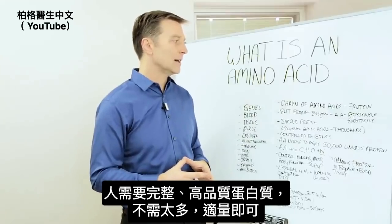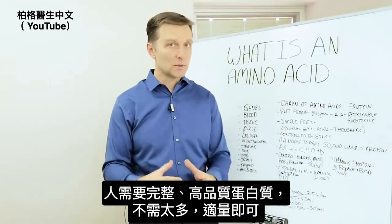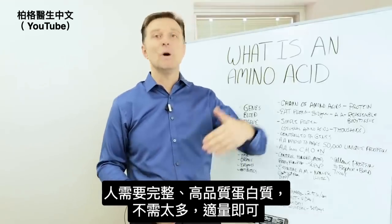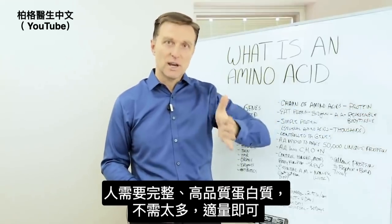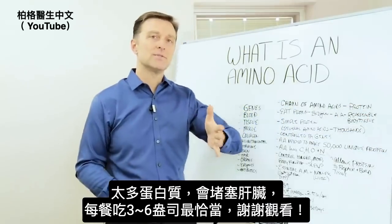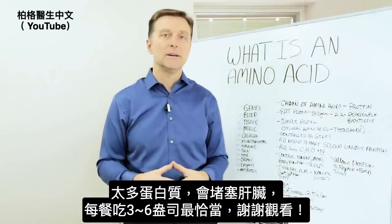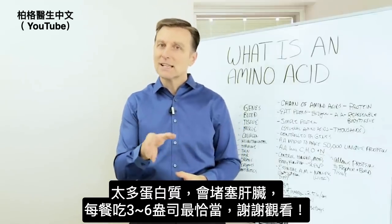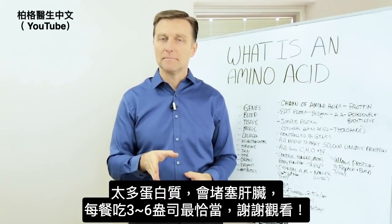You do need complete proteins — high quality protein. You don't need too much; you just need the right amount, because if you have too much protein it could clog up the liver. Between three and six ounces per meal would be optimum.